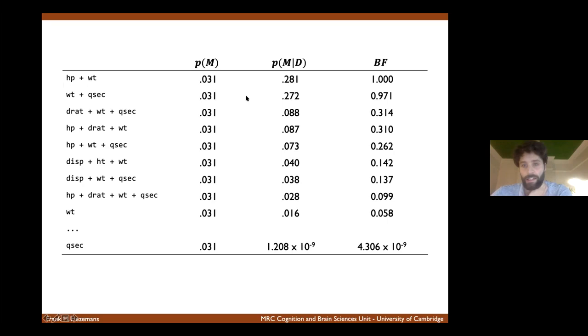The next best model, which uses different predictors, is pretty much on par with that top model. So this is again a good example to think about how we can look across different models and find the model average solution.